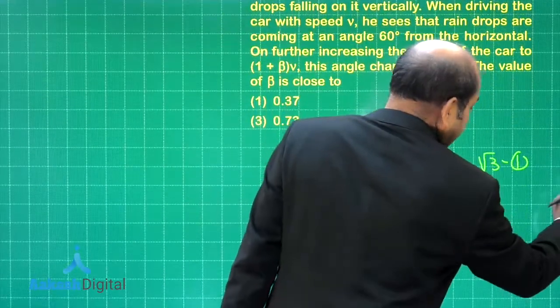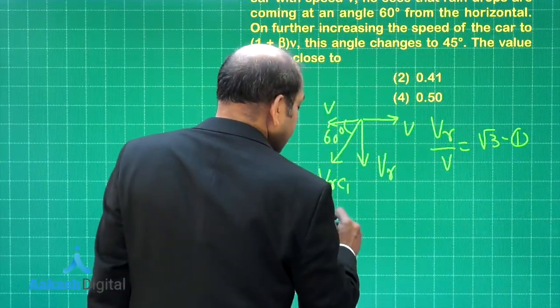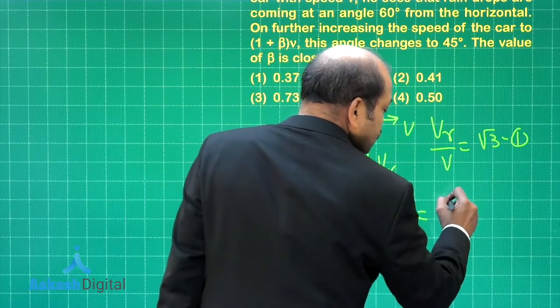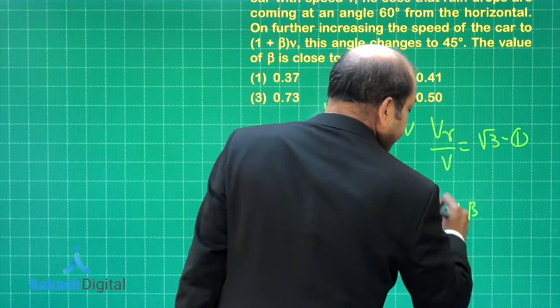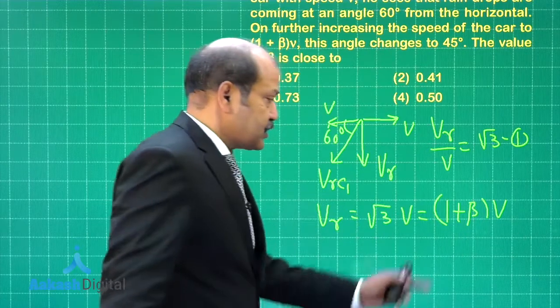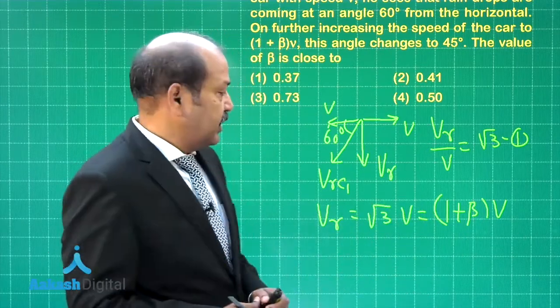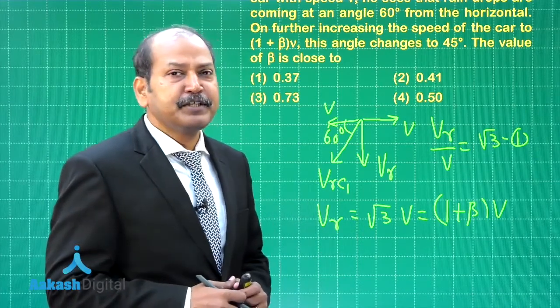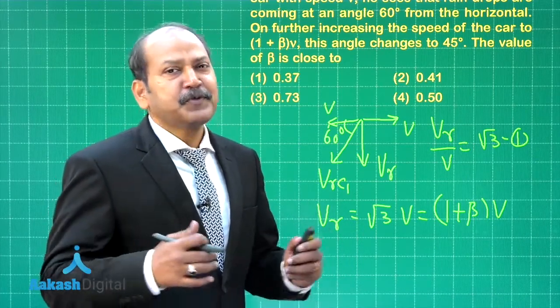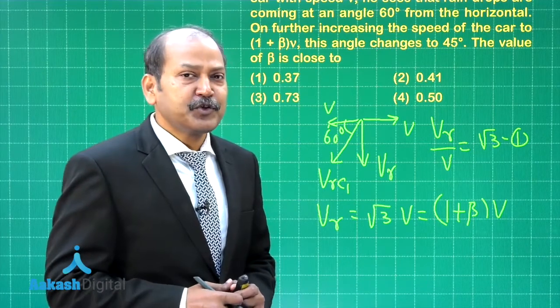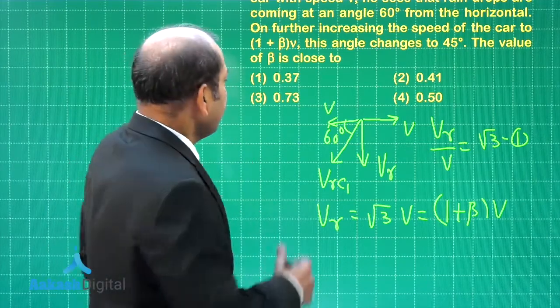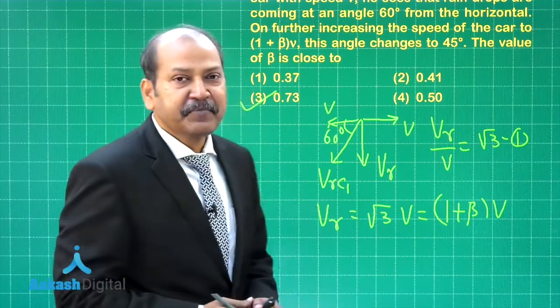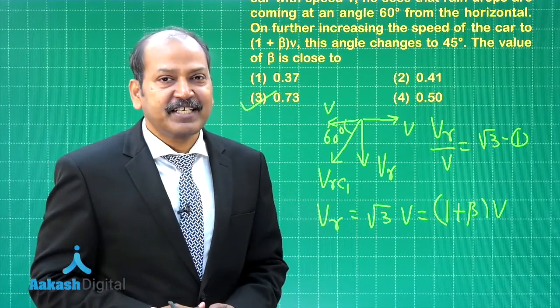So that gives us the relation that vr which is root 3 v is also equal to 1 plus beta times v. And solving for beta is pretty easy now, beta comes out as root 3 minus 1 and root 3 is 1.732. So the value of beta comes close to 0.73. If you look at the options, it clearly matches with option 3. It is time now to go to question number 6.